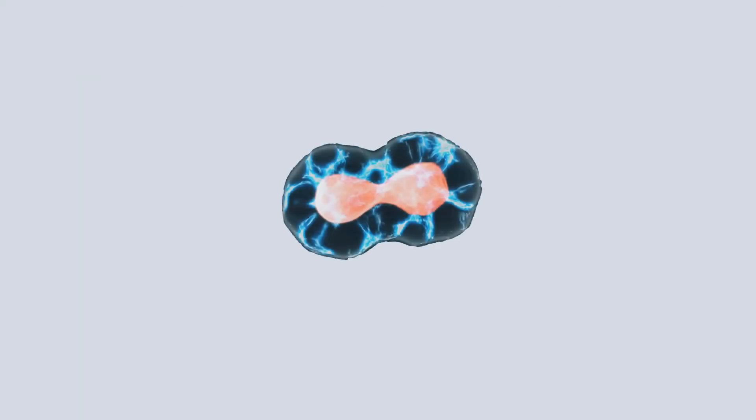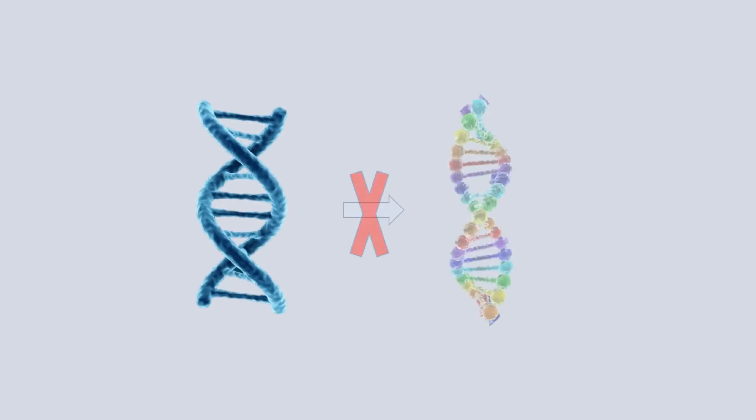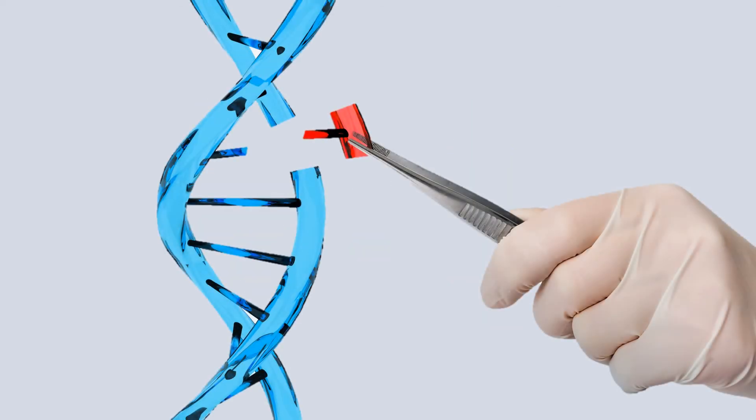Cell division involves meiosis. In sexual reproduction, the offspring do not show genetic variations. Sexual reproduction plays an important role in organic evolution through genetic recombinations and variations.